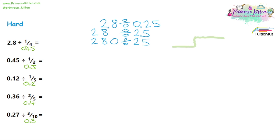Using bus stop with 25 on the outside and 280 in the middle: zero 25s go into 2, carry 2; one 25 goes into 28 with 3 remainder, carry 3; one 25 goes into 30 with remainder 5. We need to make sure the decimal place is lined up — it comes after 280, so that goes at the top. Two 25s go into 50, giving us 0.2. So the final answer is 11.2.